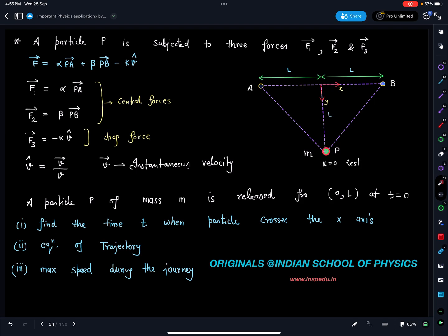The problem: A particle P is subjected to three forces. Vector F is given as alpha PA plus beta PB minus KV. The initial condition is given - the original location of points A, B, P is provided. If you see the nature of these forces that I have explained here, it is alpha times PA, which means it is along this line, so it's a kind of central force. Similarly, F2 is along a fixed point B. P is a general location and F3 is like minus K times V cap.